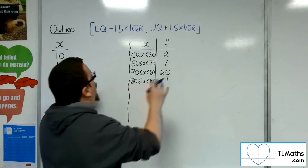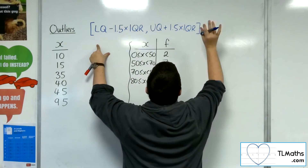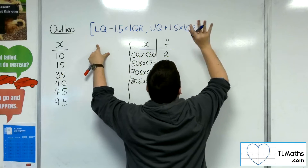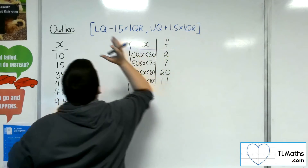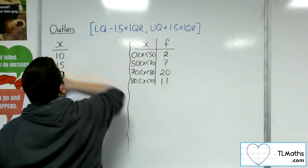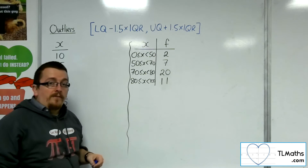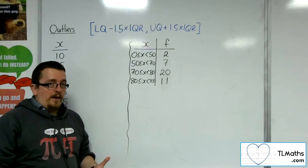Anything that is outside of this — so either larger than the upper quartile plus 1.5 times the IQR, or smaller than the lower quartile take away 1.5 times the IQR — is considered an outlier.